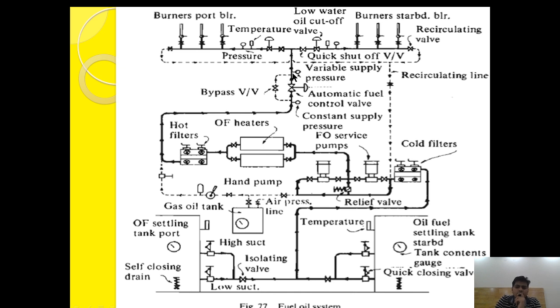After gaining the proper temperature, pressure, and viscosity, the oil passes through the automatic fuel valve where the amount of fuel is varied. Then it passes through a quick shutoff valve and temperature control valve and then to the burner.